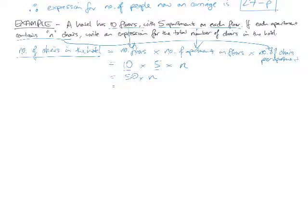And then what do we do between a number and a variable? When there's a times sign, you remove it. So an expression for the number of chairs in the hotel is: chairs in hotel equals 50n.